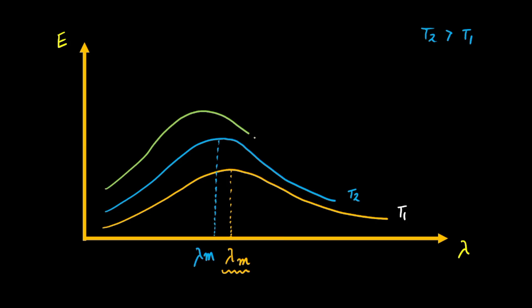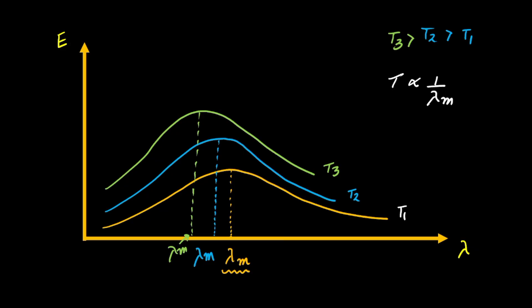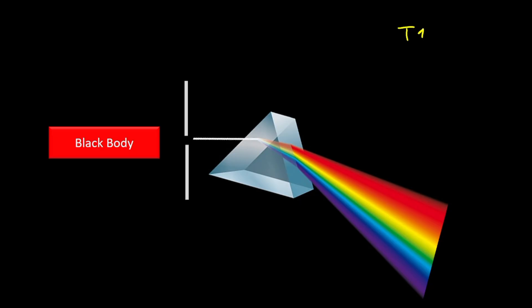If we further increase the temperature, the graph would become something like this — this is T3, and T3 is even greater than T2. If we try to find out lambda m for this situation, we would see that lambda m corresponding to temperature T3 is even lesser. From this graph, we can clearly see that the temperature is inversely proportional to lambda m — as the temperature increases, lambda m decreases.